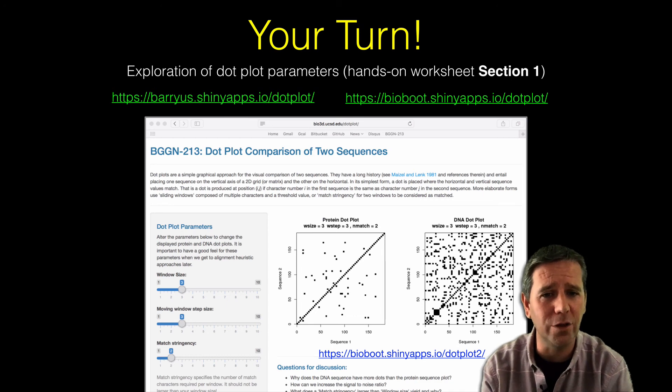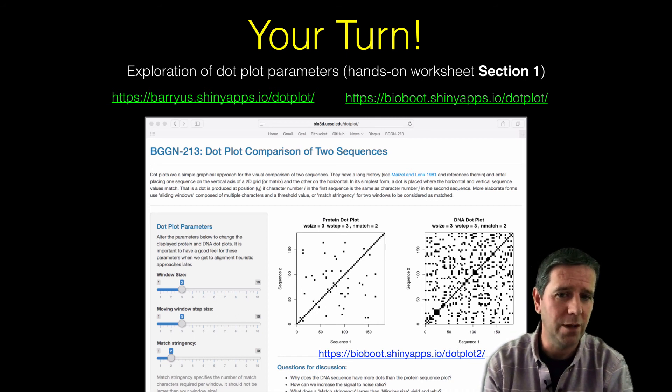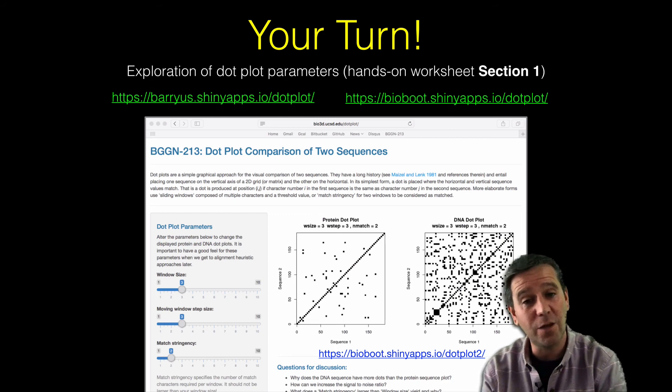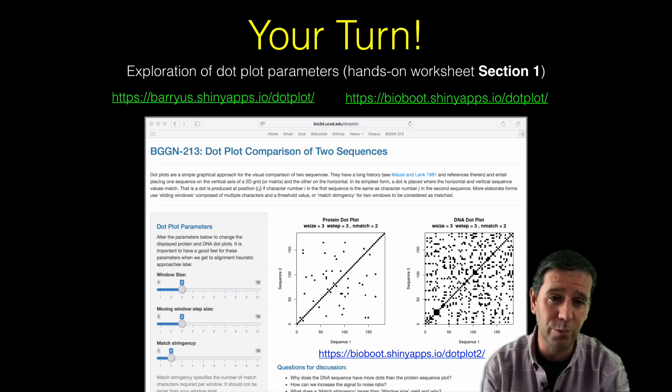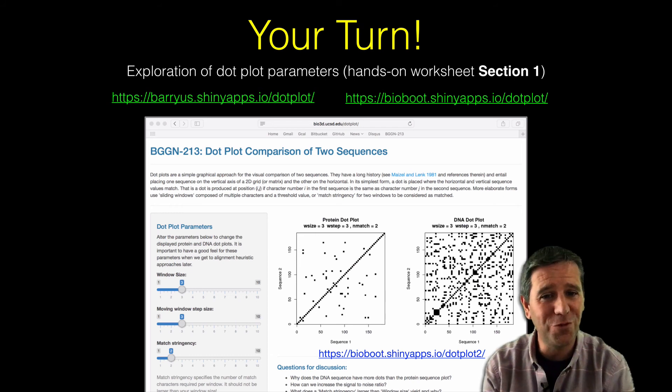Now, the questions I want you to think about when you start playing with the little sliders on this web page include: Well, what's shown here? I'll maybe answer that for you first. What we've got is two similar length sequences, but one is a dot plot of a protein sequence, and the other is a dot plot of the corresponding nucleotide sequence, but both the same number of characters. And I want you to think about, well, why does the DNA plot have more dots in it than the same length protein plot?